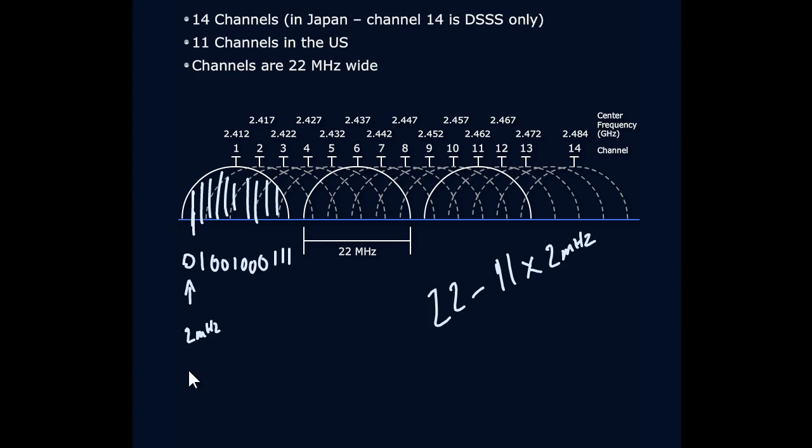If necessary, we can use all 11 of those to convey the number 1. Remember, that's our Barker chipping code, most baseline, slowest form of communication. Everything else is a more effective way to use those individual subchannels. But that's what it's all based on as the lowest common denominator.